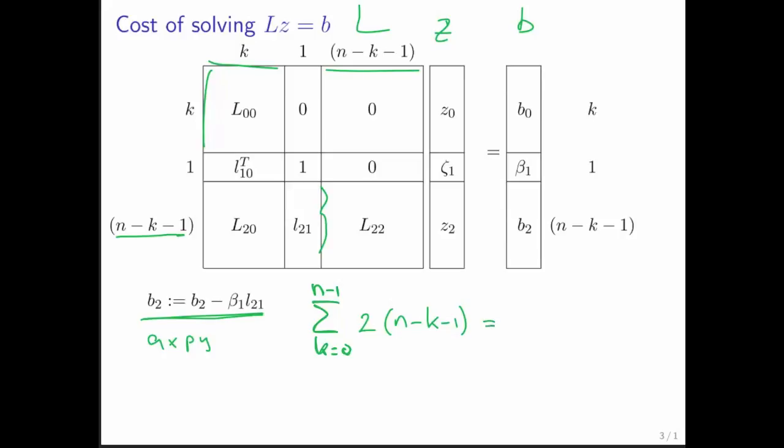Again, we can do the trick of recognizing that we can instead sum this from j equals 0 to n minus 1, 2 times j, which of course we can write as 2 times the sum j equals 0 to n minus 1 of j. But that's something we saw in week number 2. This summation right here is n times n minus 1 divided by 2. If we then have to multiply that by 2, we get that this is equal to n times n minus 1, but that is approximately n squared. So we see that solving a lower triangular system requires roughly n squared floating point operations.